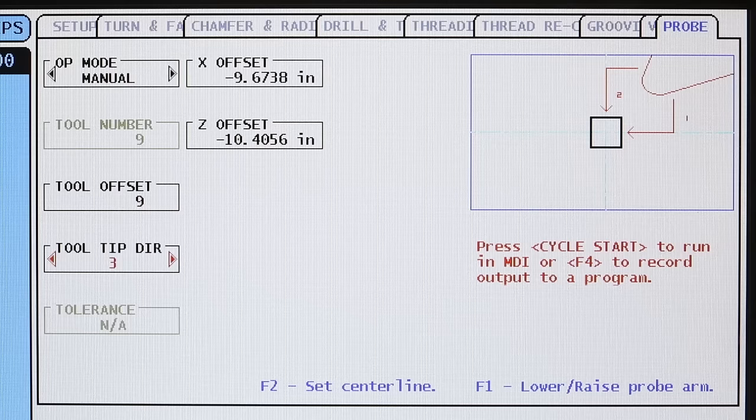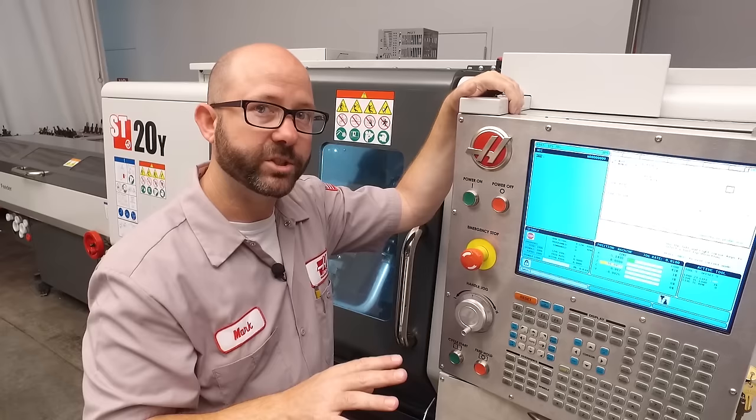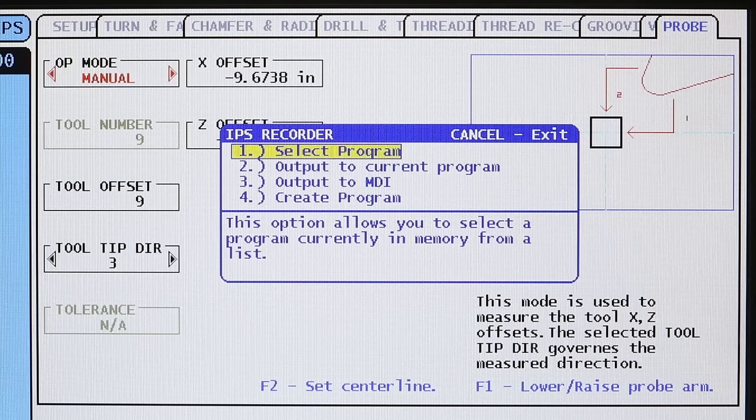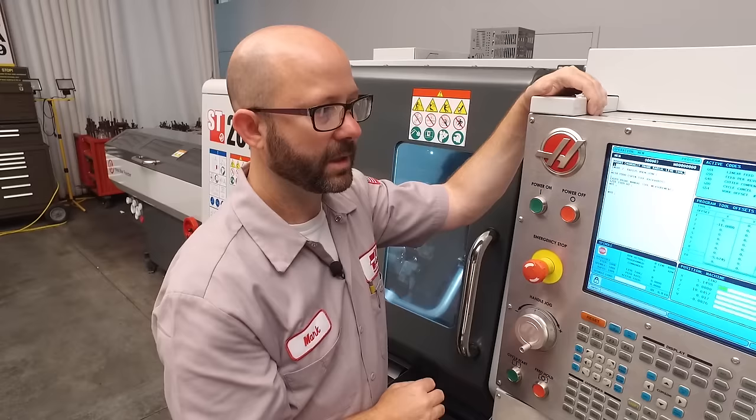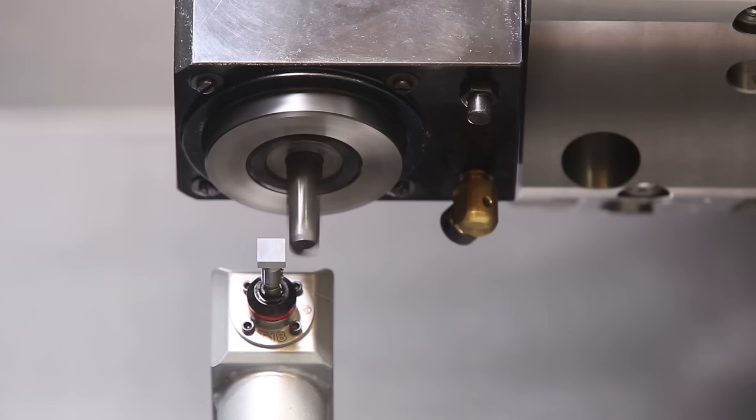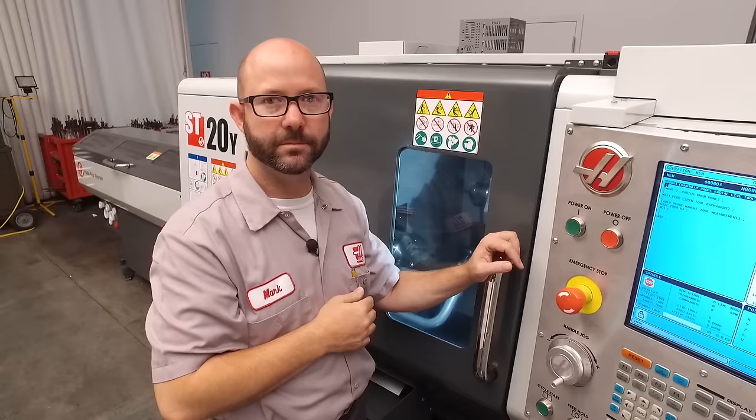So, I follow the directions on screen, press F4 to record output to a program. Now, I just insert this code into my program right after my M134, and we're ready to run. Let me press cycle start, and we'll see what it does. That looked perfect. It touched off on the side of the tool, and the tip of the tool on the X.